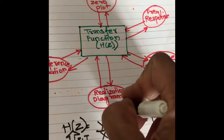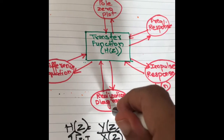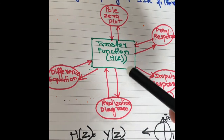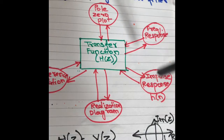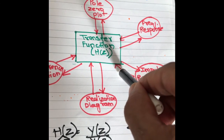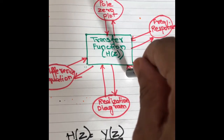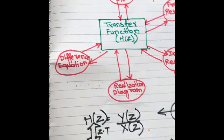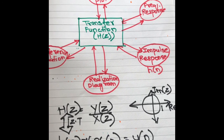As you can see, the realization diagram — which was already covered in videos for direct form 1 and direct form 2 — shows that all these representations are interconnected. If you know any one of them, you can easily find the others, and at the center is the transfer function. In designing a digital IIR filter, the transfer function is what we will be finding. If you have any doubts, please do reach out. Thank you.